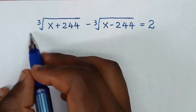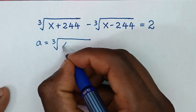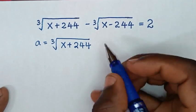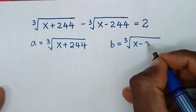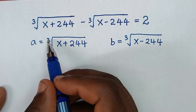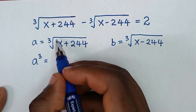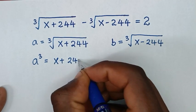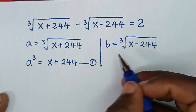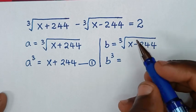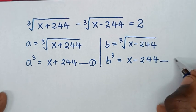In the first step, we'll let a equal to cube root of x plus 244, and we'll let b equal to cube root of x minus 244. To remove the cube roots, we'll power by 3 on both sides: a³ equals x plus 244 — call this equation 1 — and b³ equals x minus 244 — call this equation 2.